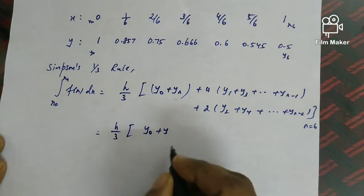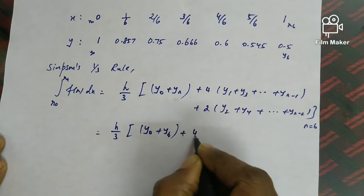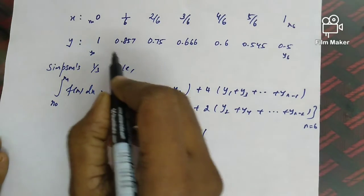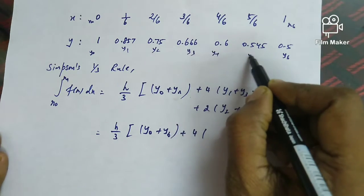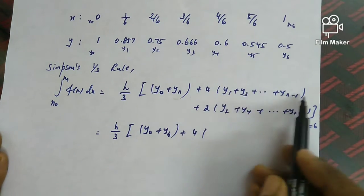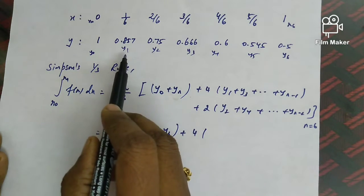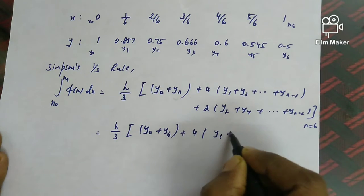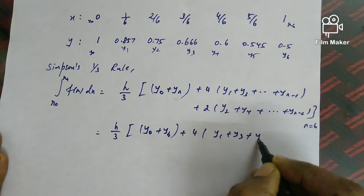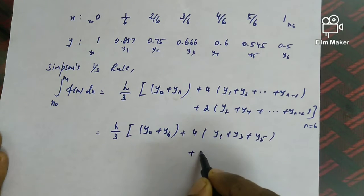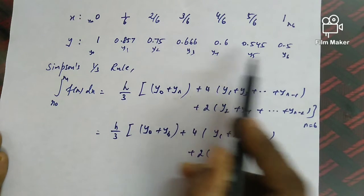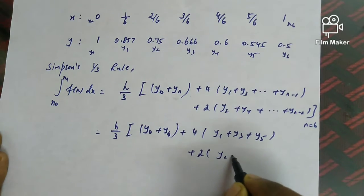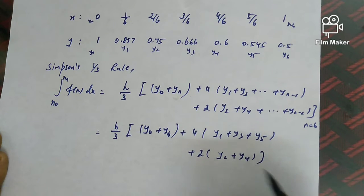Since n=6, we write: y₀ + y₆ + 4(y₁ + y₃ + y₅) + 2(y₂ + y₄). Note y₆ is the end point, and y₂, y₄ are the even ordinates (y₆ is already included as the endpoint, so not repeated here).